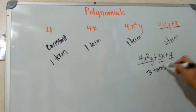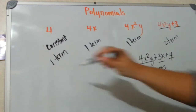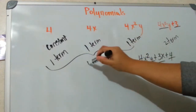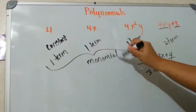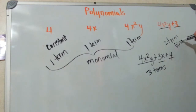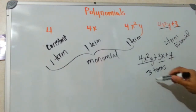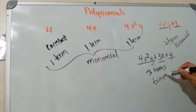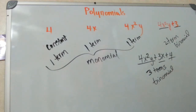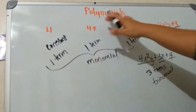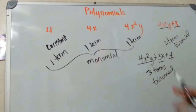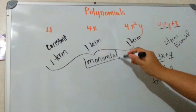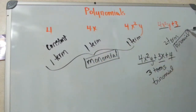Based upon the number of terms, we can call you something. This polynomial can be called a monomial. This one would be a binomial. And this one would be a trinomial. Once you have more than three terms, we would just call you a polynomial. If you're one, two, or three, we can call you by these names. Try to remember that these names come from the number of terms.